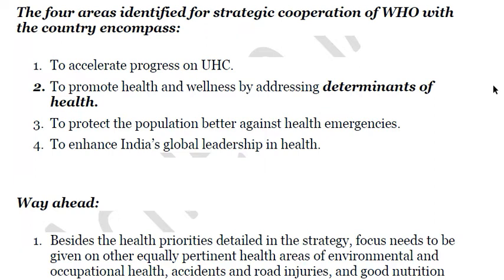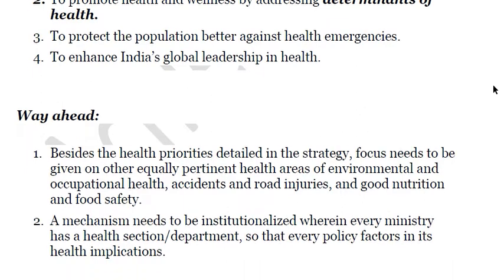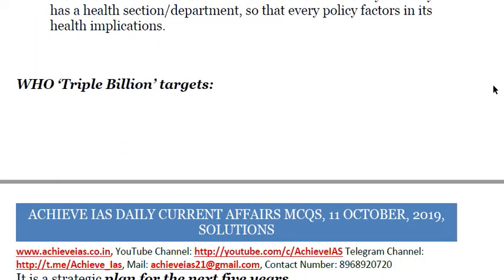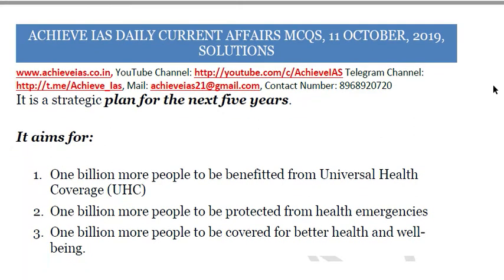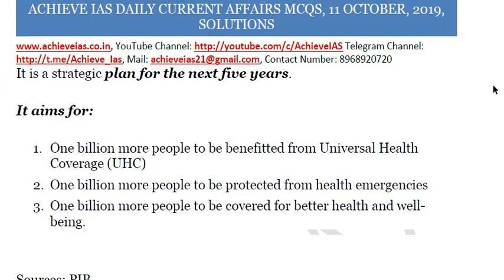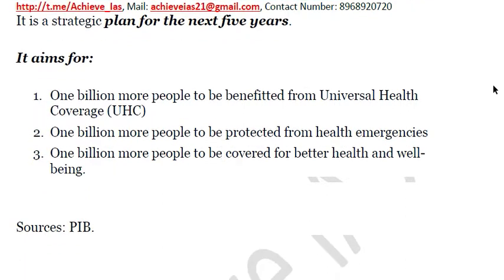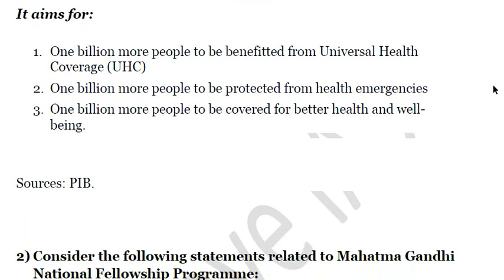The strategy aims to protect the population better against health emergencies and enhance India's global leadership in health. The WHO Triple Billion Targets are a five-year strategic plan aiming to cover one billion more people under universal health coverage, protect one billion more from health emergencies, and improve health and well-being for one billion more people.